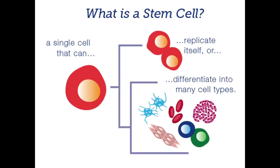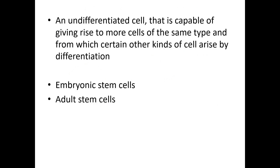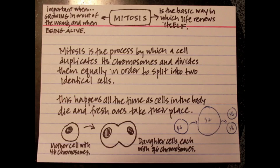Stem cells are unspecialized cells that divide by mitosis. They can become specialized for a specific function — they can replicate themselves and differentiate into many cell types. There are embryonic stem cells and adult stem cells, and this is where it links to mitosis.